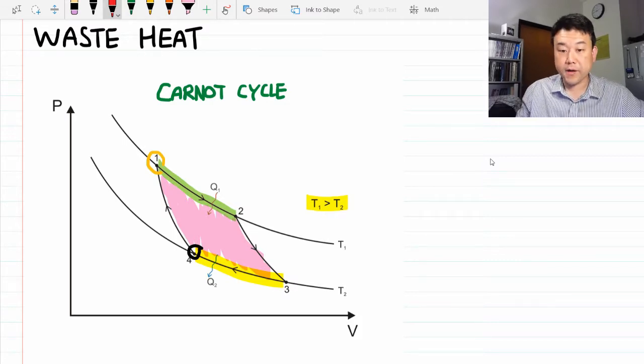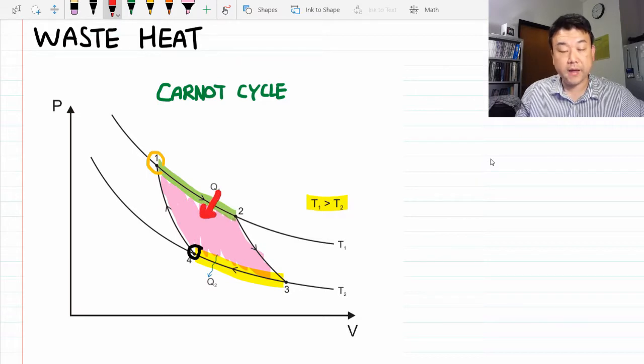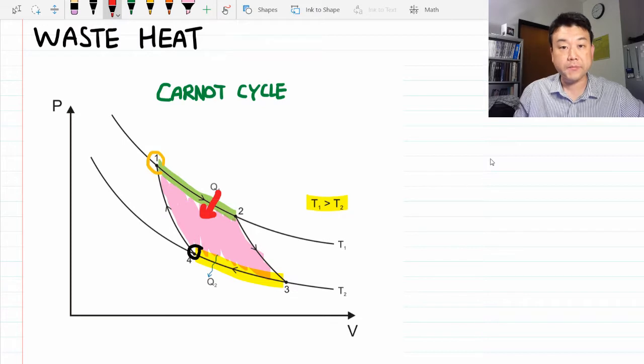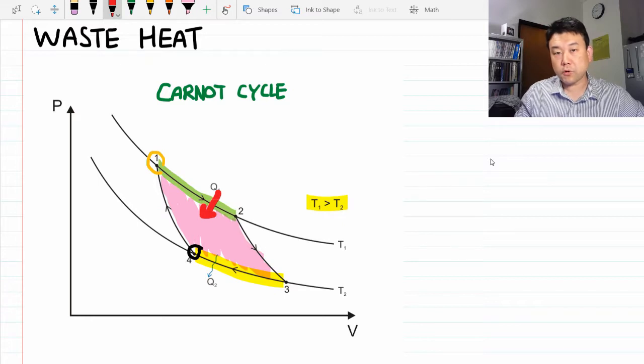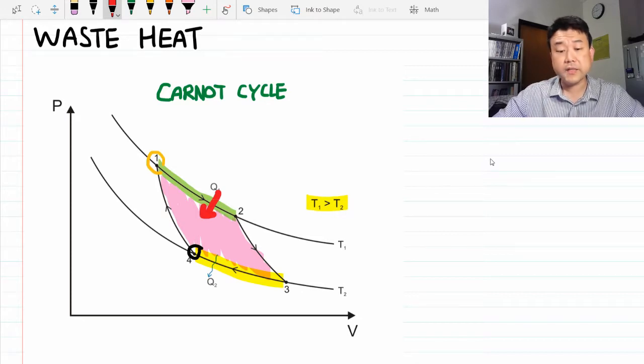Now if we had our way, our heat input, the fuel that we had to burn up to generate the high temperature, would all turn into this net work. This is what we would call 100% efficient. And in an ideal world, it is really consistent with the first law: energy is conserved. All of the heat input goes into work done.